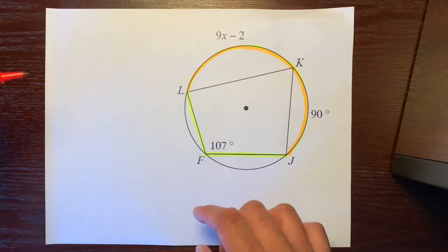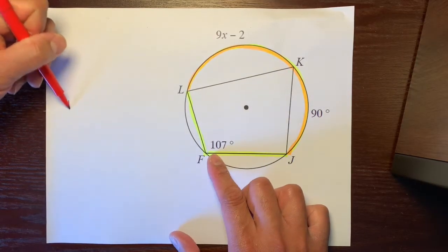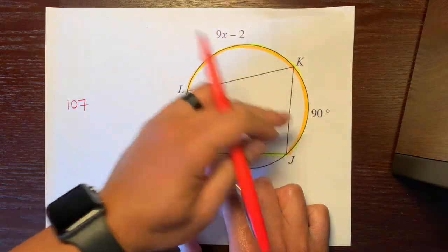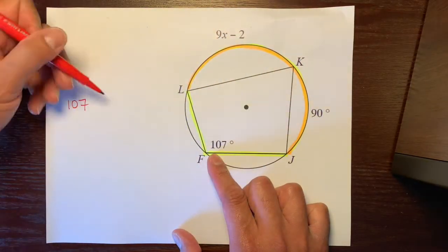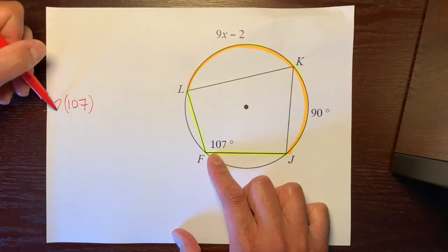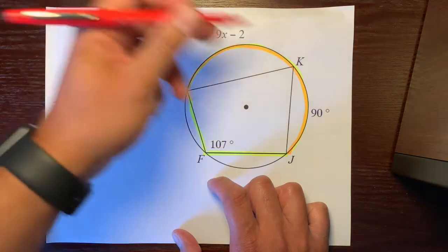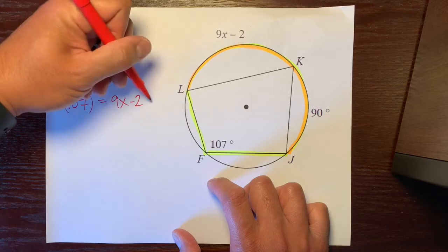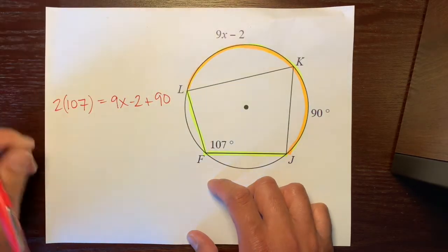So one way we can do this is we take this 107 degrees. And because it's half the measure of its intercepted arc, we're going to double it to make it equal to its intercepted arc, instead equal to 9x minus 2 plus 90 degrees.